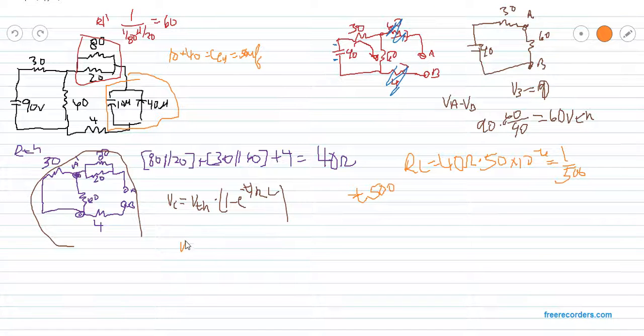So, we know that our VC is equal to V-thevenin, 60, times 1 minus E to the negative T, 500.